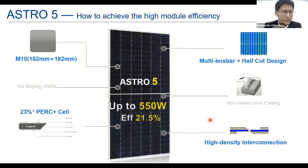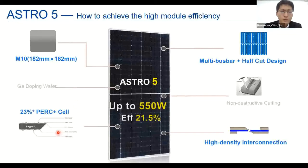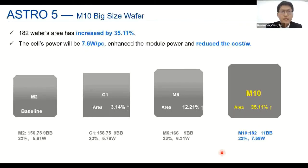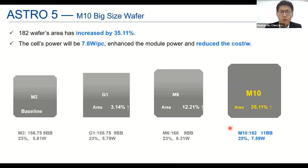So how to achieve high module efficiency, high module power, and lower cost? That's our TRO5 product, released last year. The highest module power can reach up to 550 watts and efficiency is about 21.5%. Behind this, we use key technologies: the first is the M10 wafer. With the larger cell area — increased by 35% compared to M2 — the power can be increased from 450 watts to 540 watts, and it can also reduce cell process cost and non-silicon material cost.